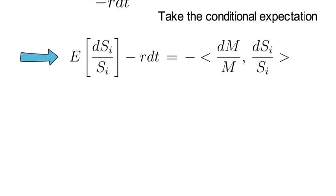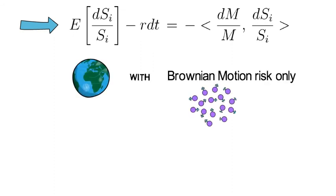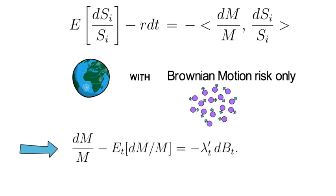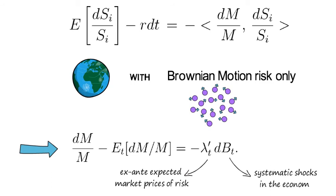So in a world with Brownian motion risk only, the innovation part of the SDF equals dm over m minus the conditional expectation of dm over m, which is simply minus lambda_t transpose d_bt. Again note lambda is the column vector of ex ante expected market prices of risk and dB are the systematic shocks in the economy.